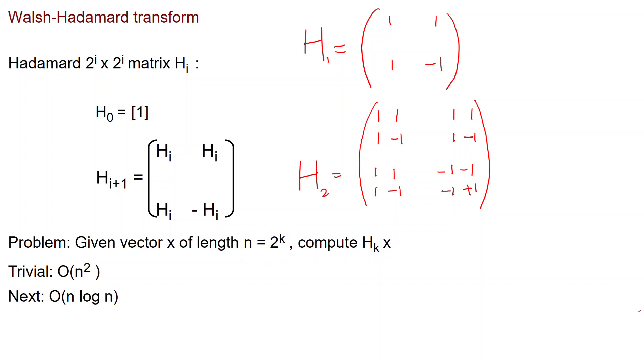So we have a Hadamard matrix and the vector, and we are interested in their product. The trivial way of doing that is computing the matrix-vector product. That takes time n squared. So each entry of the output is the inner product of one row of the matrix and the vector, and takes time n. If you do this n times, you will get time n squared.